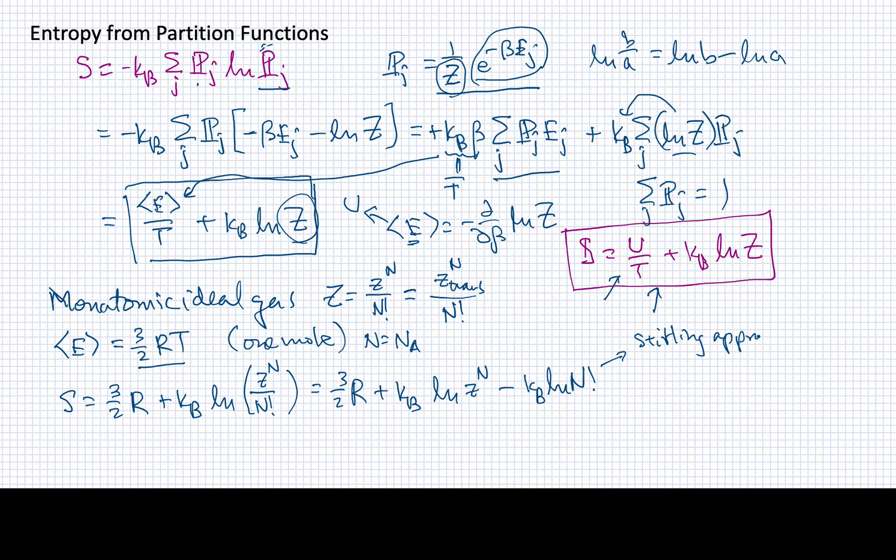To simplify this one, we're going to use something called the Sterling approximation. It basically says that this log of n factorial, when n is really large, is very well approximated by n log n minus n. Let's plug that in.